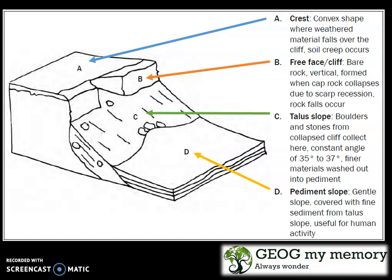C is your talus slope. This is where boulders and stones from the collapsed cliff collect. It has a constant angle of 35 to 37 degrees. Finer materials are washed out into the pediment.